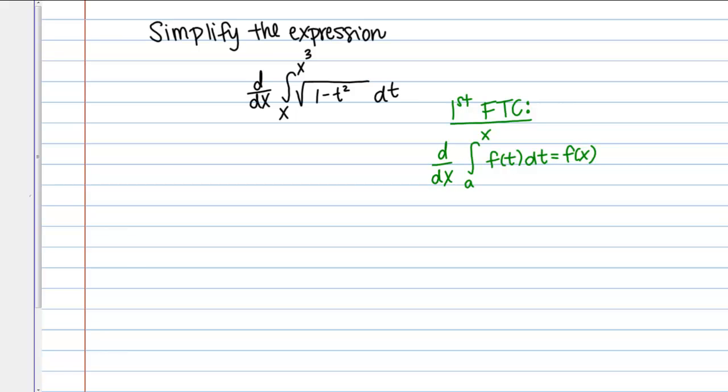Then our expression, if you look at it, is a little more complicated. We're simplifying this expression: the derivative with respect to X of the integral from X to X cubed of the square root of 1 minus T squared DT. This square root of 1 minus T squared, that's our function. That's our F of T if you parallel it to the formula here.